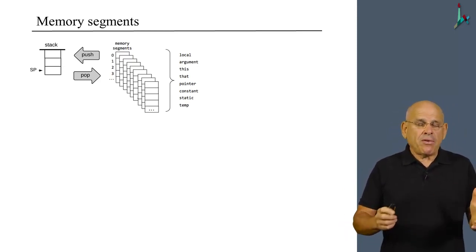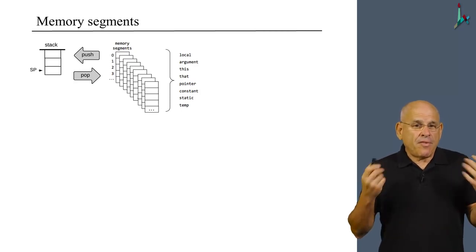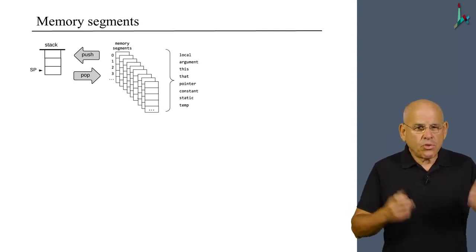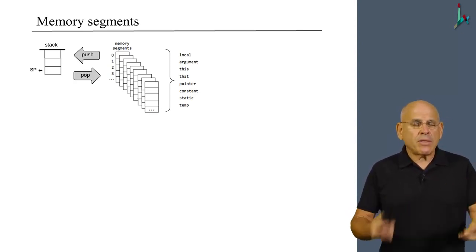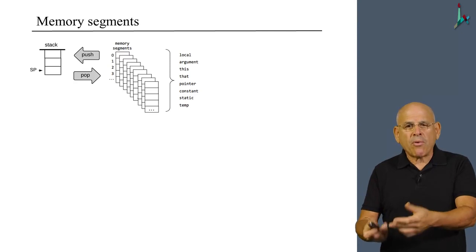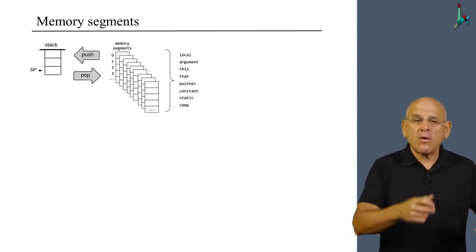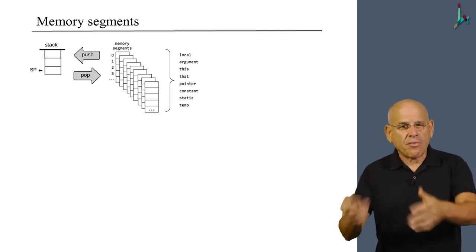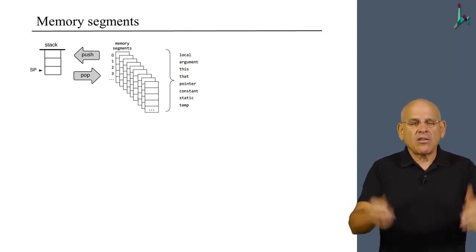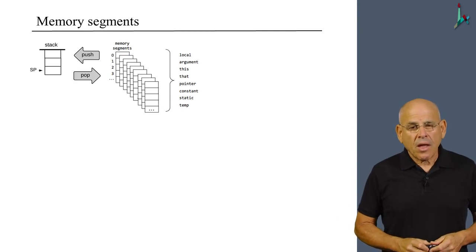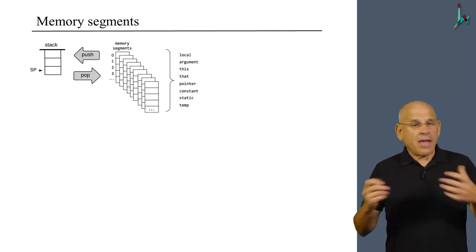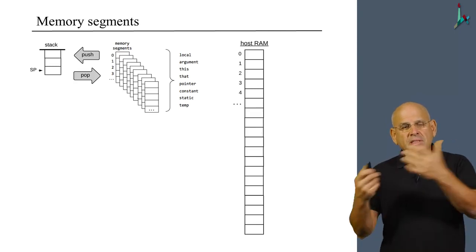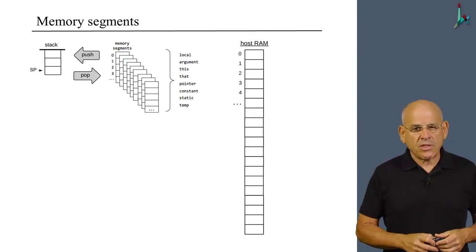Let me remind you that in VM programs, if you want to operate on these eight segments, we have to use push and pop commands. We always have to say on which segment we operate and on which entry within the segment, for example, push local 3 or pop static 2 and so on. At the end of the game, everything that we do at the VM level is going to be reduced to operations on the RAM.